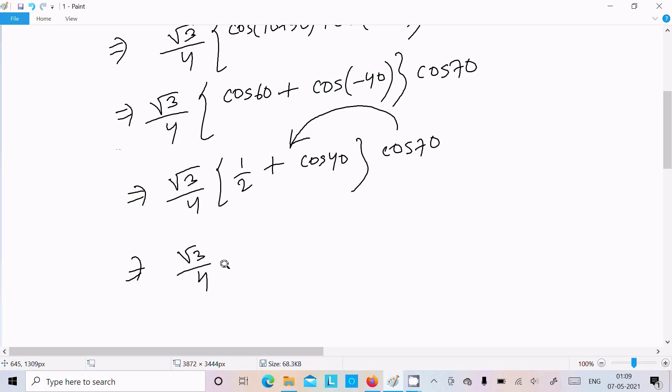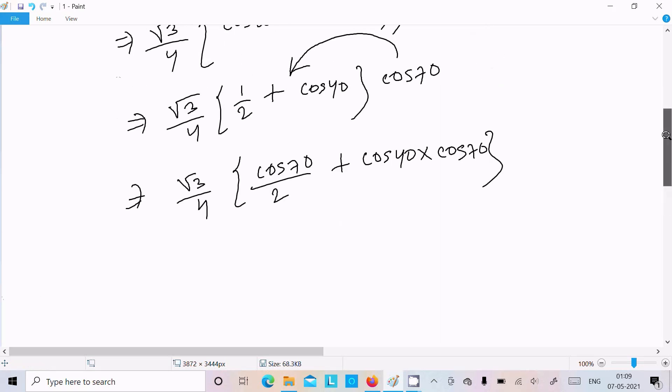So root 3 by 4, here cos70 divided by 2, cos40 into cos70. Now numerator and denominator we need to multiply with 2. So here 2, here also 2. 2s cancel, so this becomes root 3 by 8. Here this is cos70. Again 2 cosA into cosB: cosA plus B plus cosA minus B.